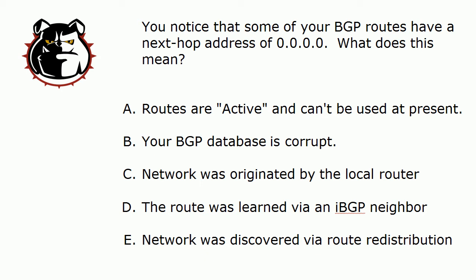Does it mean A, the routes are active and can't be used at present? B, that your BGP database is corrupted? C, that the network was originated by the local router? D, the route was learned via an IBGP neighbor? Or E, the network was discovered via route redistribution?